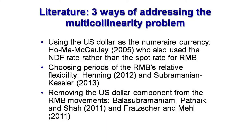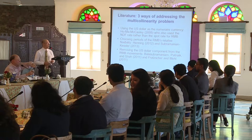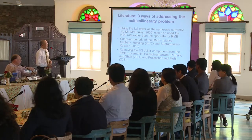The second approach was taken by Henning and Subramanian-Kessler. They chose periods for which the renminbi exchange rate was relatively flexible — more flexible than July 2005, when the renminbi was de-pegged from the U.S. dollar. The third approach was to obtain the orthogonal part of the renminbi exchange rate relative to the U.S. dollar, and then use that residual in the Frankel-Way regression equation. Bala, Subramanian, Patnaik, and Shah — whose authors are here — and other authors also used this approach.